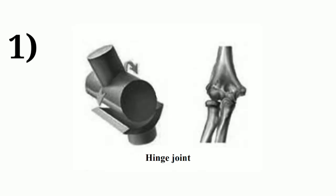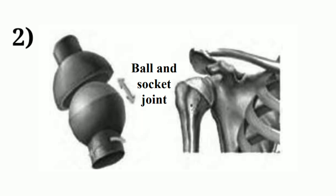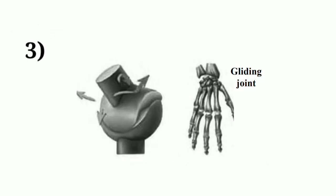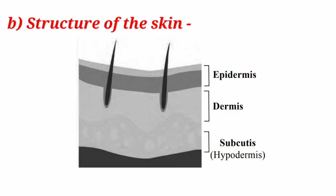Question 7: Draw diagrams. a. Types of joints: 1. Hinge joint, 2. Ball and socket joint, 3. Gliding joint. b. Structure of the skin.